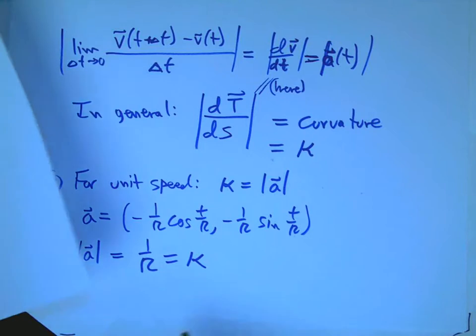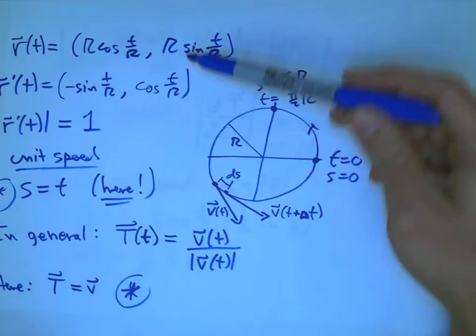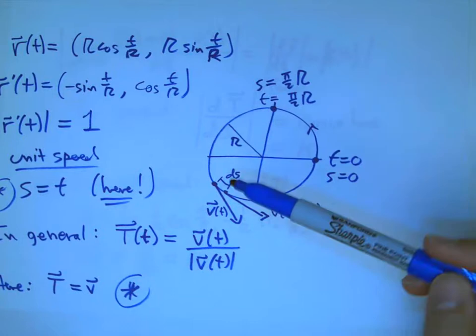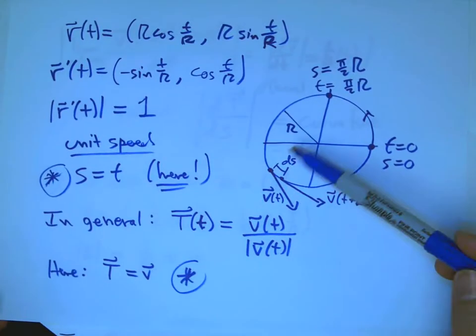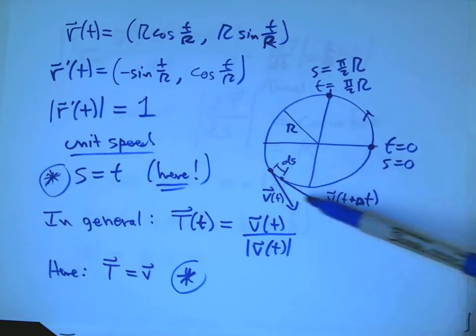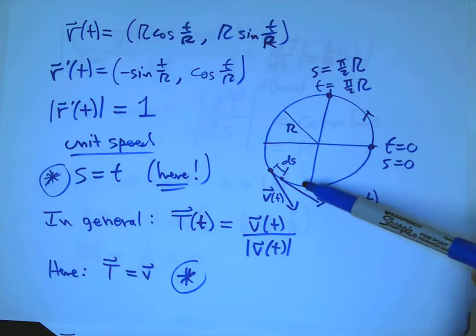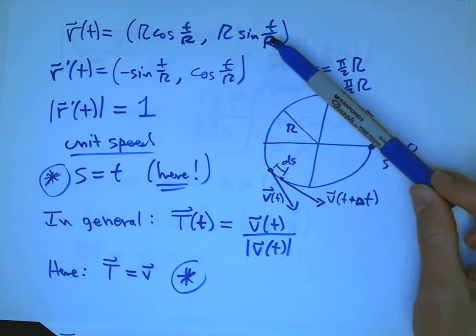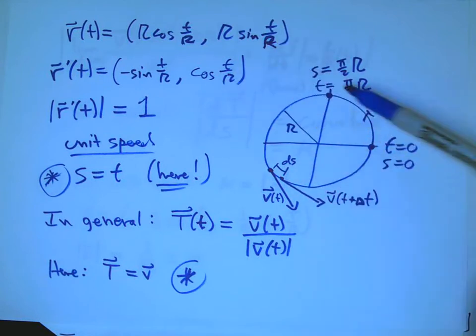So for a circle, the curvature is 1 over r. And you might say, wait a minute, no, no, no. For a circle parametrized at unit speed, the curvature is 1 over r. But remember, the curvature is supposed to be something that doesn't have anything to do with the parametrization.